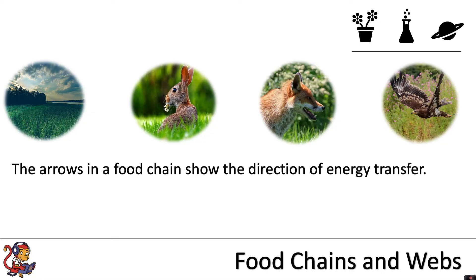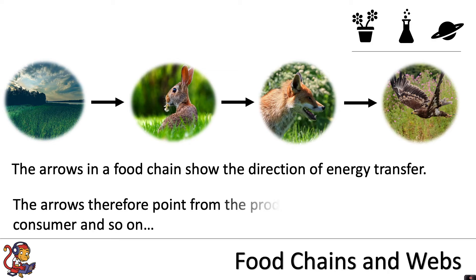The arrows in the food chain show the direction of energy transfer. The arrows therefore point from the producer to the primary consumer and so on, so the direction of the arrows is really important. The energy is being transferred from the grass to the rabbit, then from the rabbit to the fox, and then from the fox to the eagle.